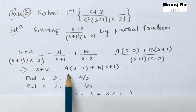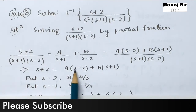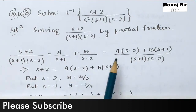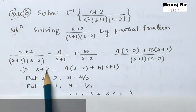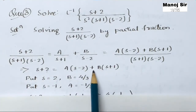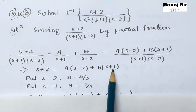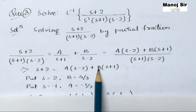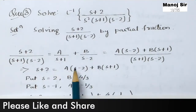To find B, we put s = 2 to cancel the A term. Substituting s = 2: 2-2 = 0, so A·0 = 0. Then 4 = B·(2+1) = 3B, so B = 4/3. We now have the values of A and B, so we substitute them back.